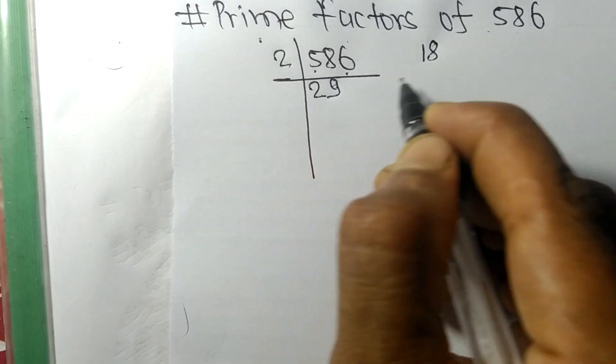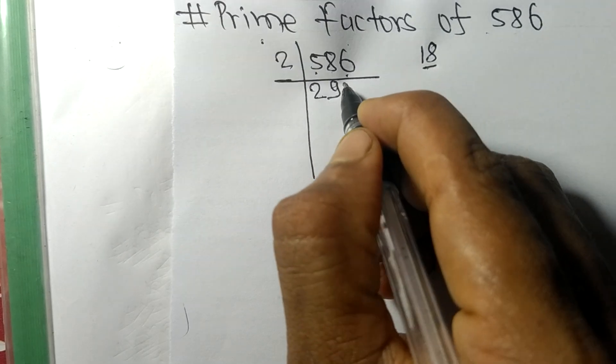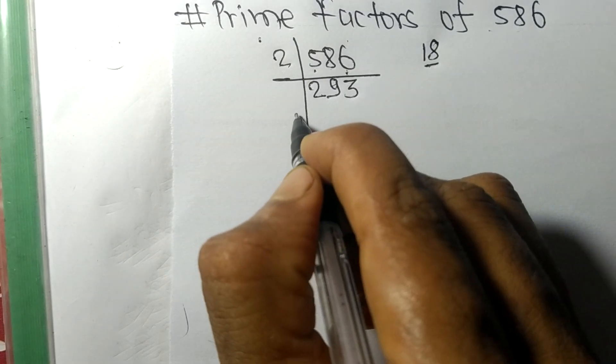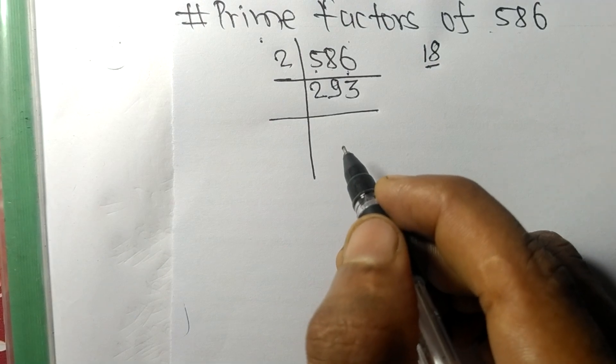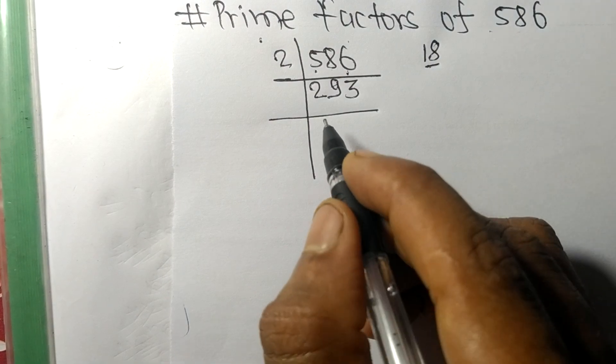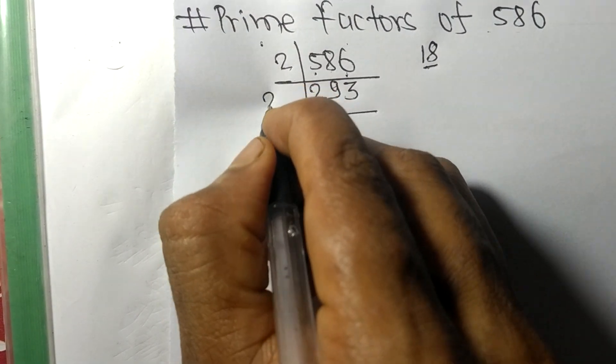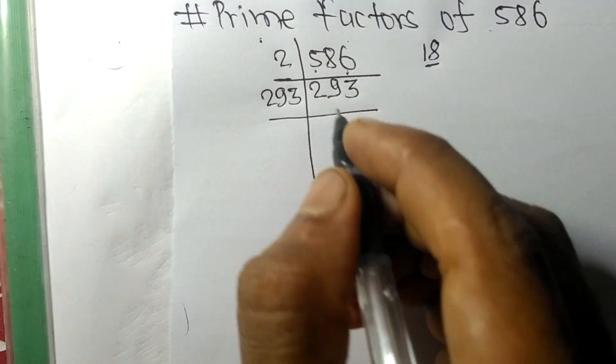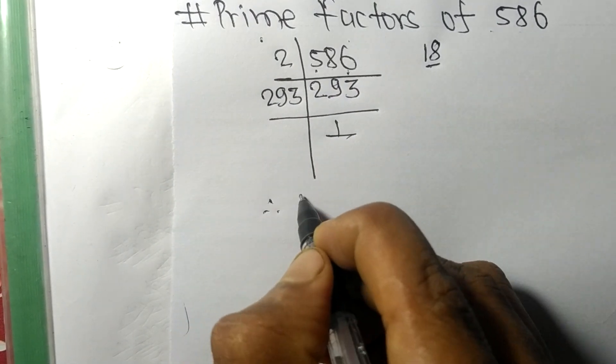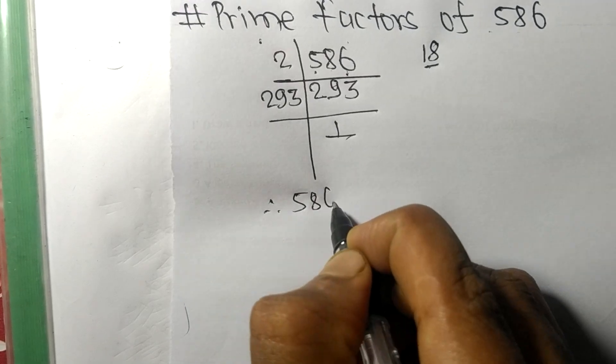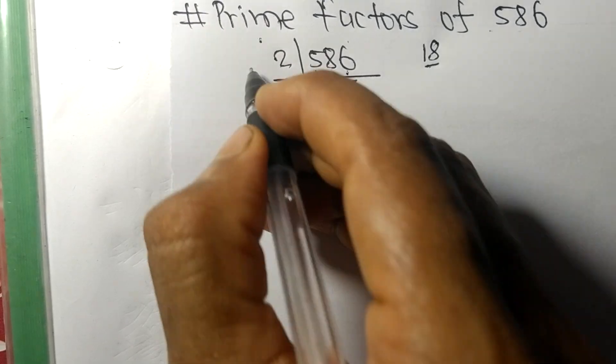So now we got 293, which is our prime number. It is divisible by 293 itself, and we get here 1.